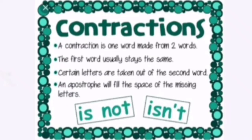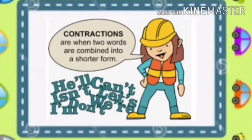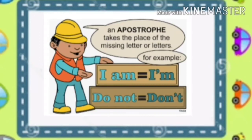Today, we are going to learn about contractions. Contractions are when two words are combined into a shorter form. An apostrophe takes the place of the missing letter or letters. For example, I am becomes I'm.